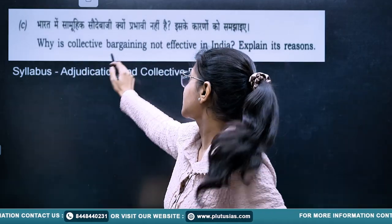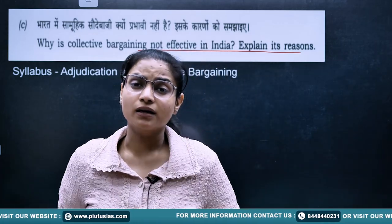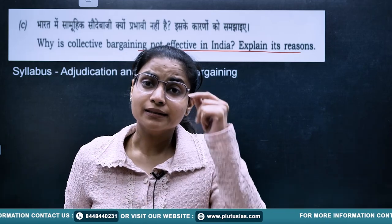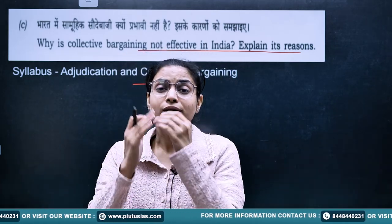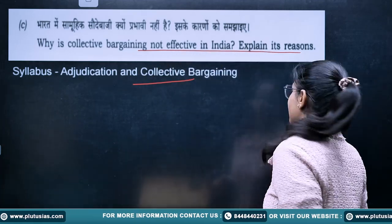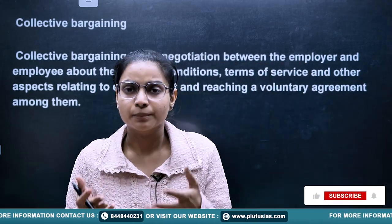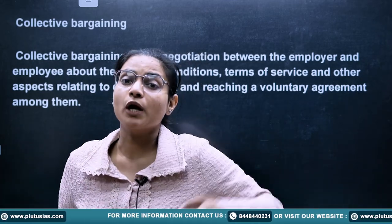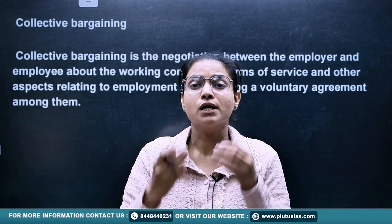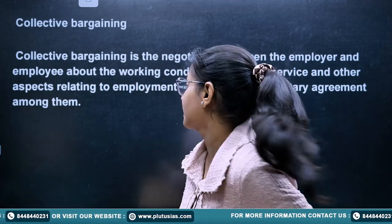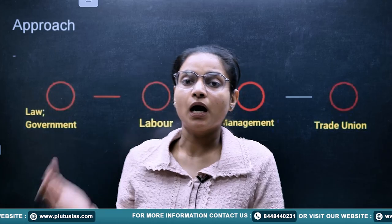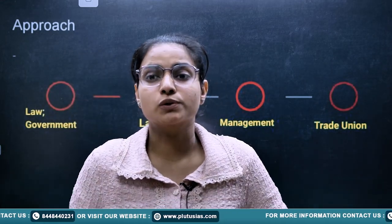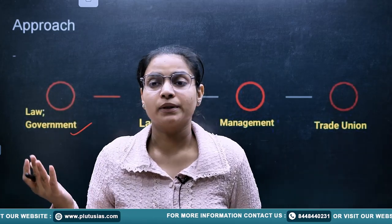The next part asks: why is collective bargaining not effective in India? This is directly from your syllabus. For any topic on problems, think stakeholder-wise. Collective bargaining is where the employer and employee reach an agreement on terms and conditions regulating employment. Explain this in simple terms first, then approach by thinking about each stakeholder involved in collective bargaining and what problems they create.